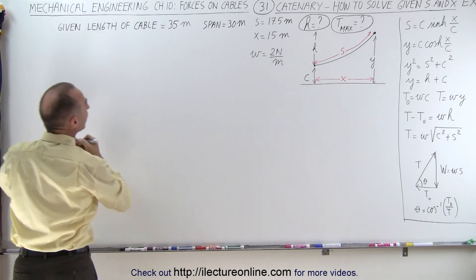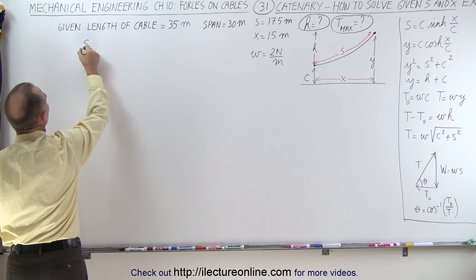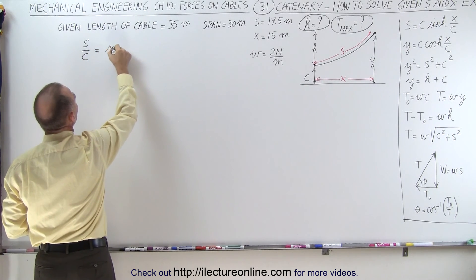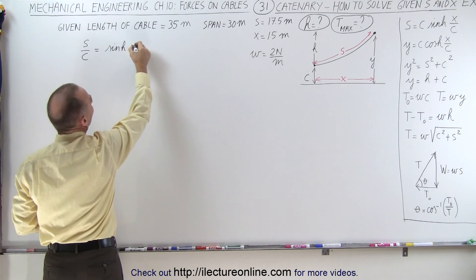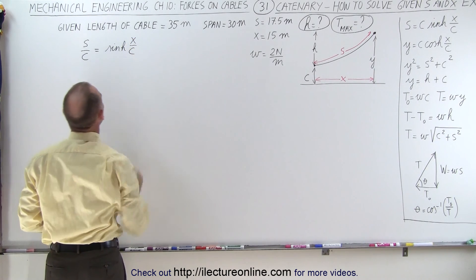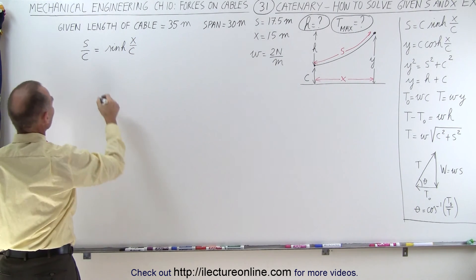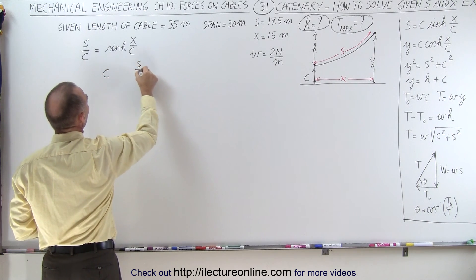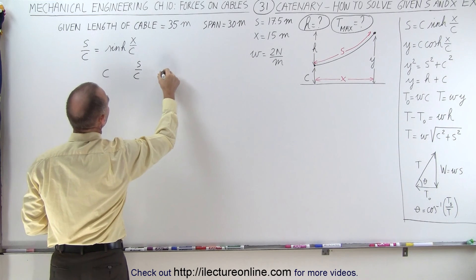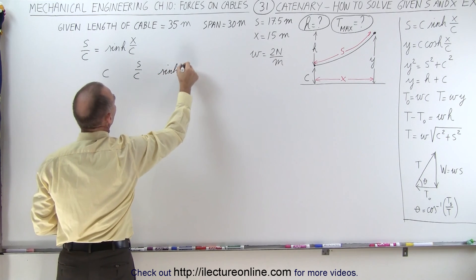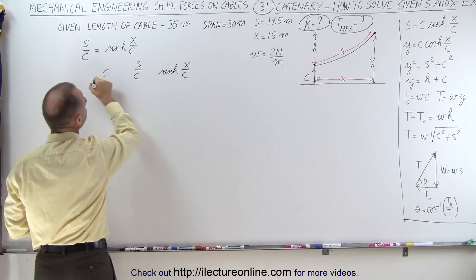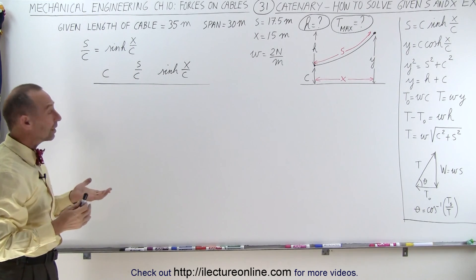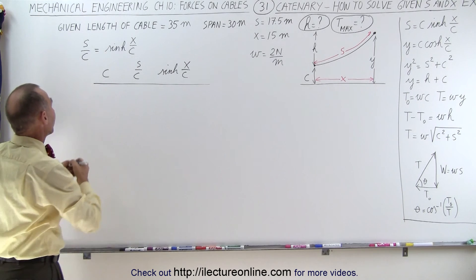We can write this as S divided by C equals the hyperbolic sine of X over C, which means we're going to try some values for C, and then we're going to calculate S over C and the hyperbolic sine of X over C. Where do we start? Let's try C equals 5 and see what happens.